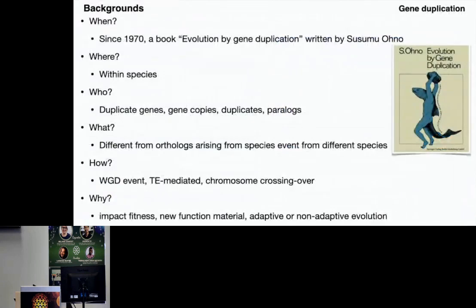Gene duplication is a common phenomenon throughout the eukaryotic tree of life, as described in the book Evolution by Gene Duplication written by Ohno in 1970. Since then, researchers have been examining the details of how, why, and what of gene duplication events. We now know that duplicates can be formed by many mechanisms, including whole genome duplication events, tandem duplication, and TE-based duplication events.